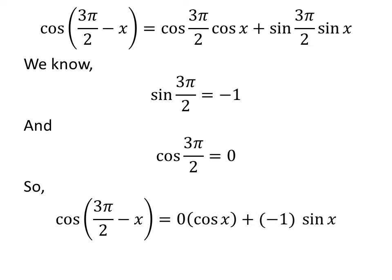Let us replace the value of sine of 3 times pi upon 2 and cosine of 3 times pi upon 2 in the above expression of cosine of 3 times pi upon 2 minus x. So, we get cosine of 3 times pi upon 2 minus x is equal to 0 into cosine of x plus minus 1 times sine of x.